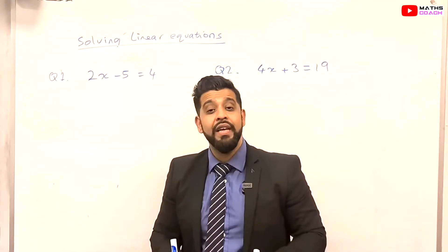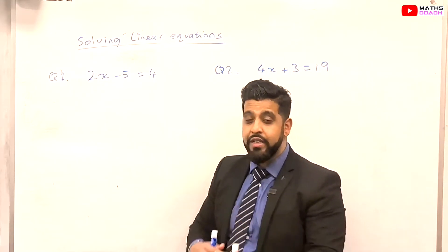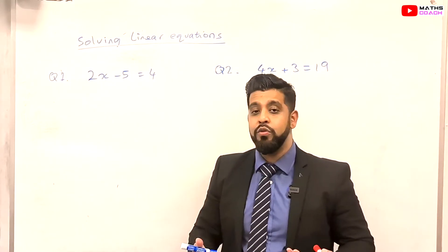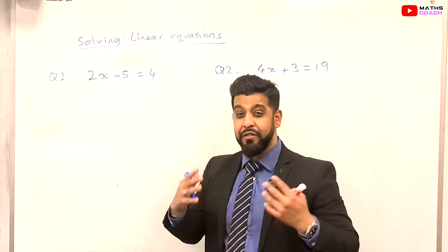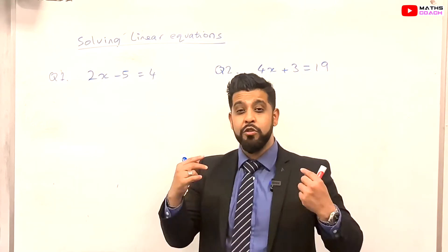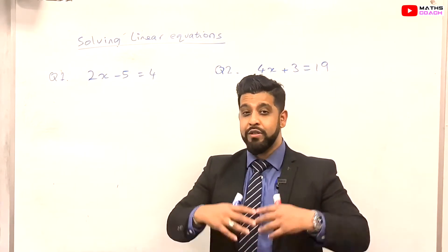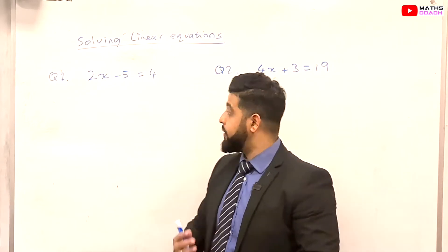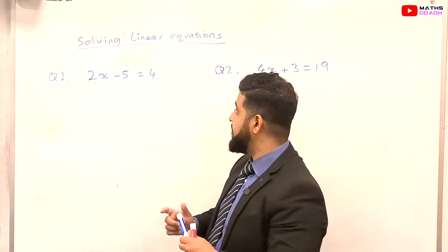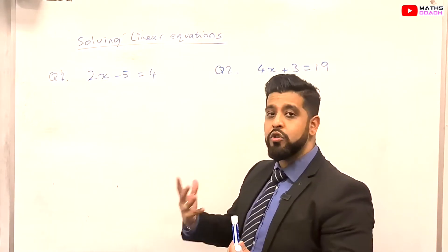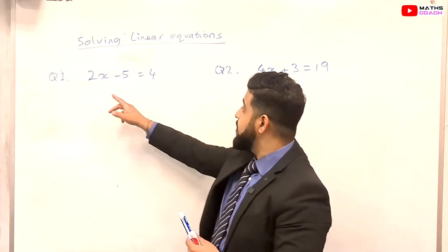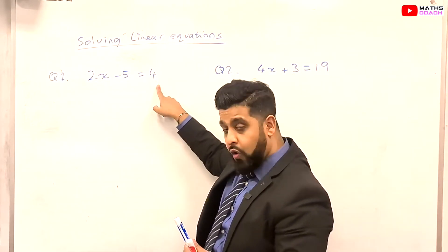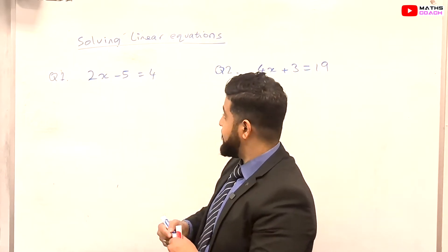If you don't want to use the flowchart method, you can use the conventional method that most people use. The flowchart method is something students really find useful because they can see what's going on and they're comfortable with it. But let's do the method most of you may be more familiar with. So you've got 2x minus 5 is equal to 4, and you want to find what x is.